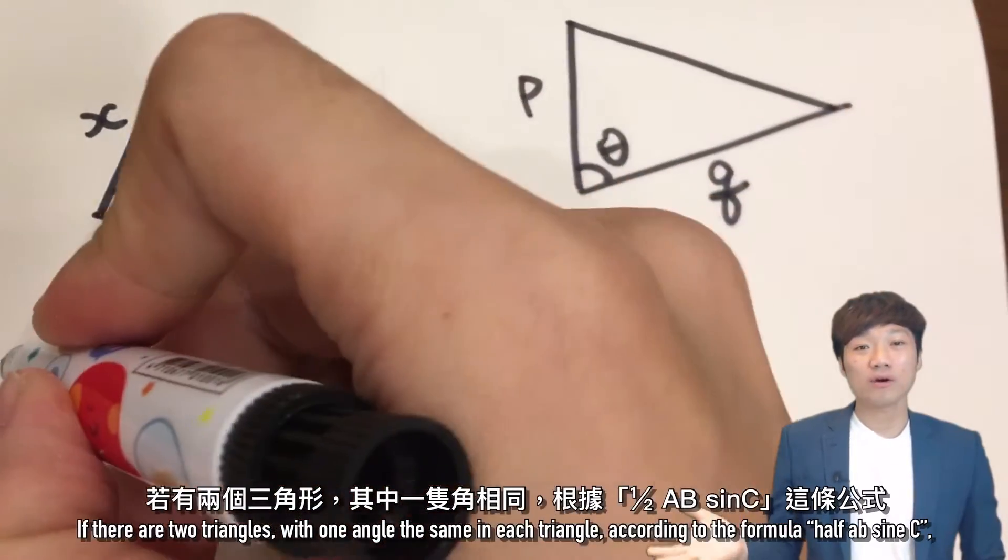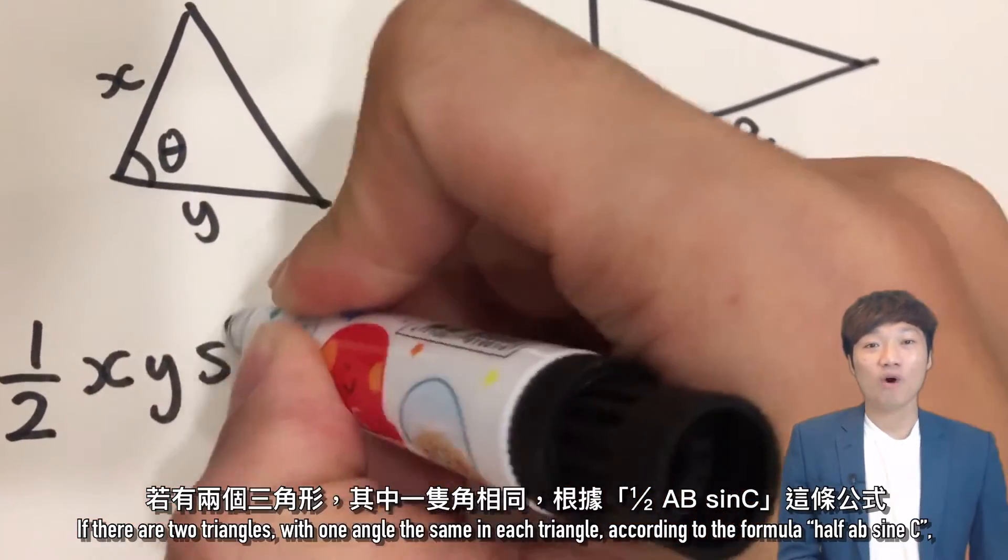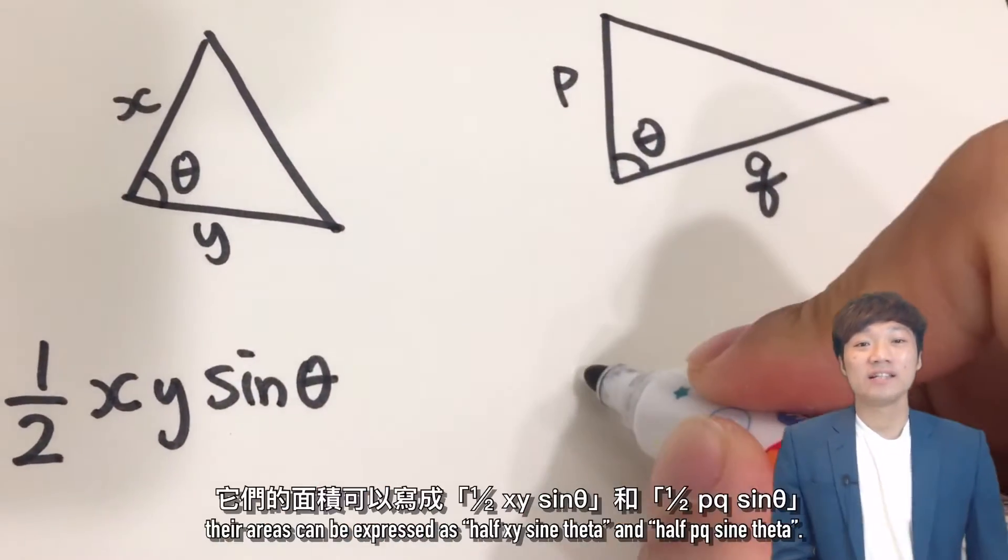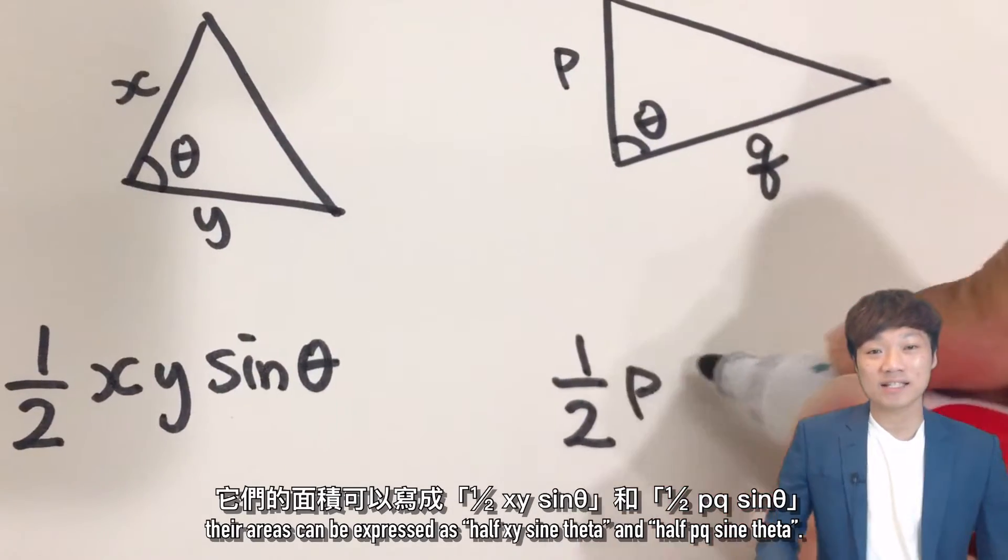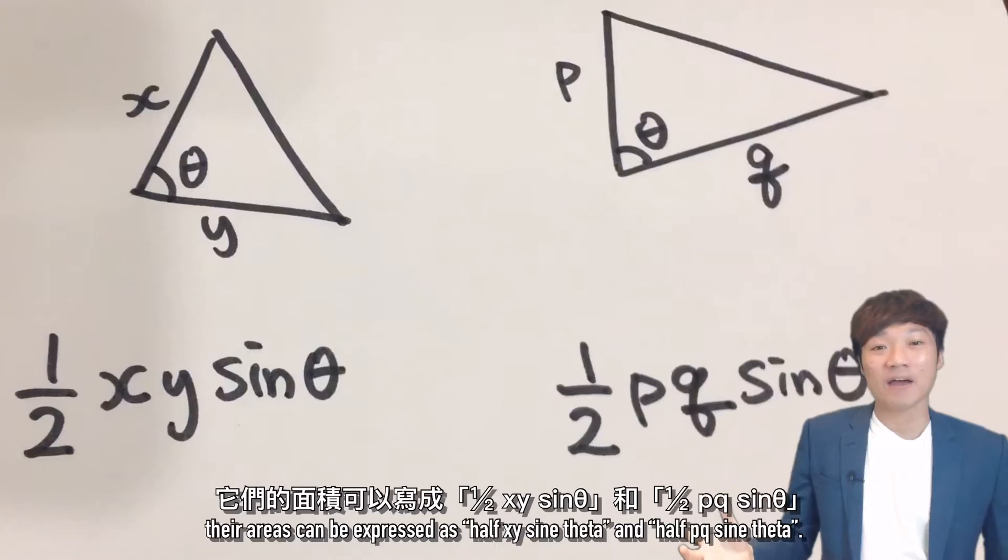If there are two triangles, with one angle the same in each triangle, according to the formula of half AB sine C, their areas can be expressed as half XY sine theta and half PQ sine theta.